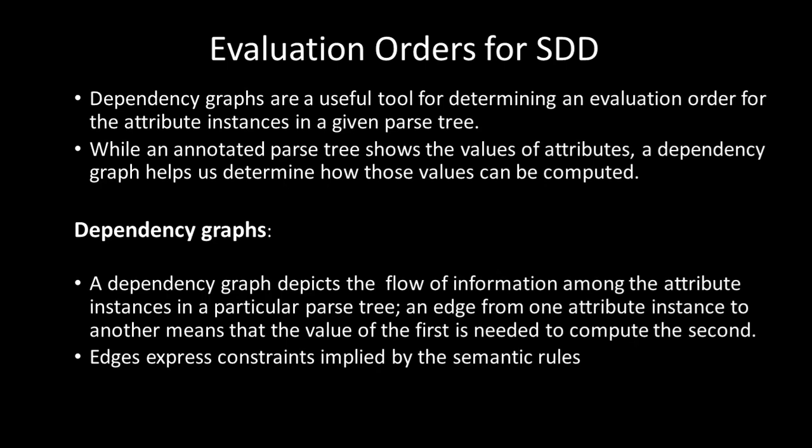The dependency graph consists of nodes as well as edges. By using the dependency graph we check the order of attribute instances which determines the evaluations. The parse tree shows the values of attributes, and the dependency graph first determines how these values can be computed. The dependency graph helps check the order of evaluation of each and every attribute instance in a given parse tree.